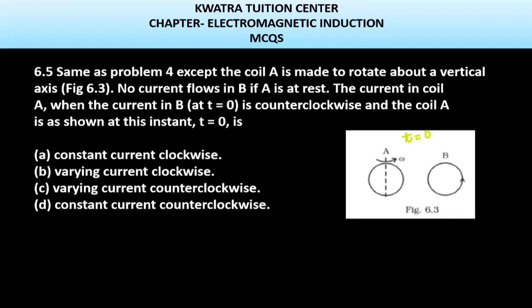And coil A is as shown at this instant t = 0. So let's determine how the current flows in A. What will be in A? First of all, what should you know?